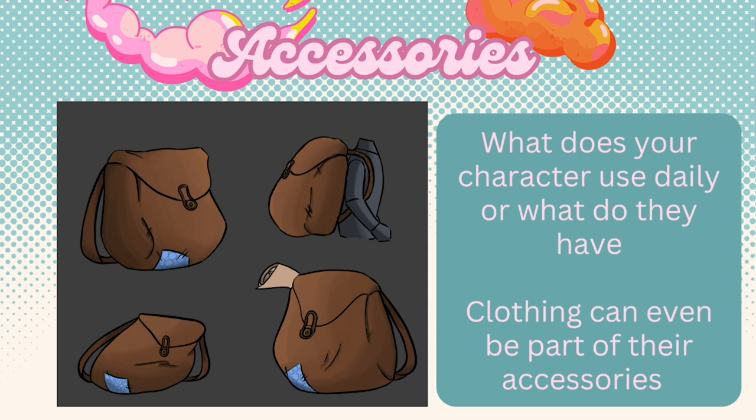Next, let's talk about accessories. Accessories can tell a lot about what the character does with their time. It can be a bag full of items for their journey ahead or a map that leads them to their destination. Your character's accessories can be simple — it could be something that your character uses daily. Clothing can even be part of their accessory like a cloth or hood.